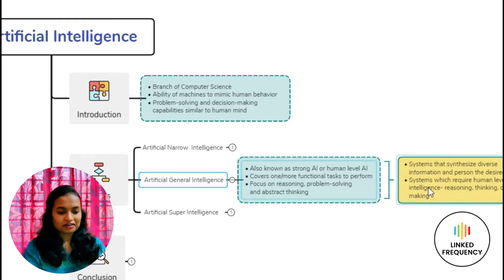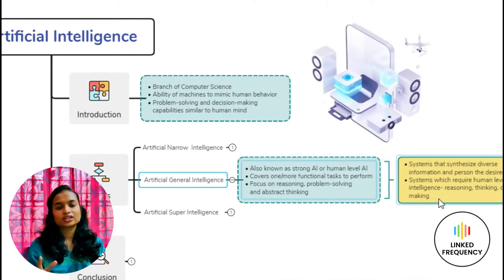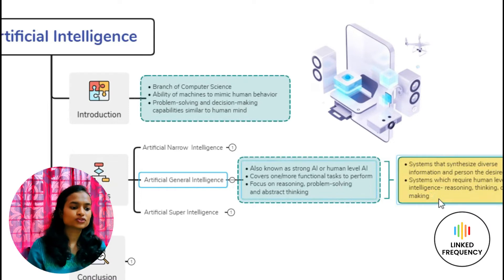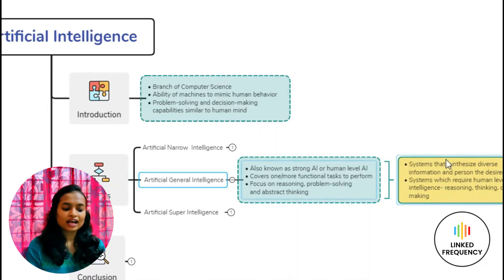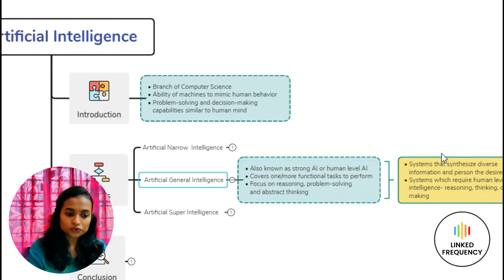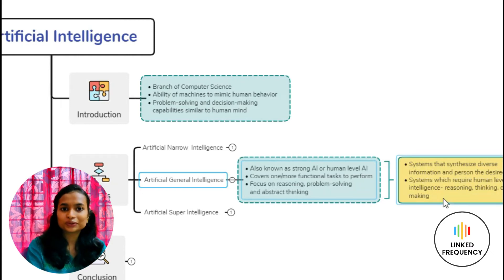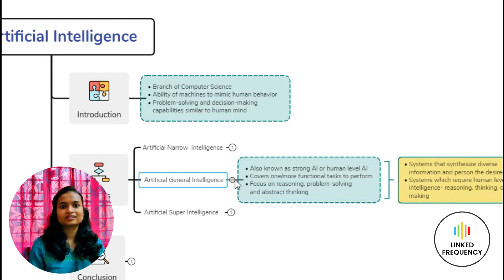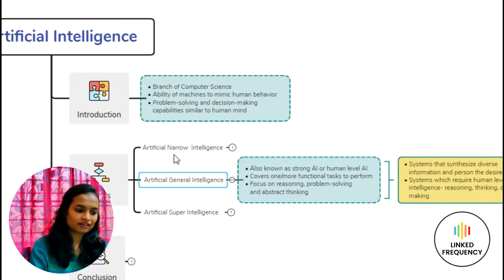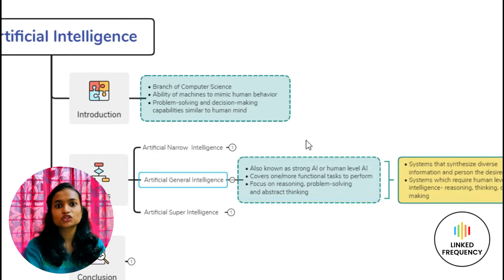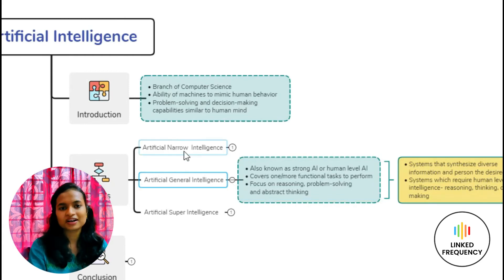Examples of Artificial General Intelligence include any system which takes a huge amount of data to arrive at one particular decision — synthesizing large amounts of information to come to a conclusion. Also, systems which require human-level intelligence to mimic skills, reasoning, and thinking very similar to a human being use AGI. At present we are still in the process of achieving AGI, so currently we are in the Artificial Narrow Intelligence stage, and the examples you see day to day are all part of ANI.